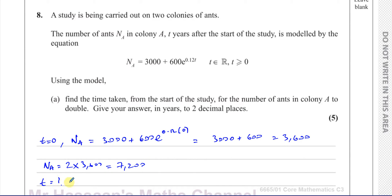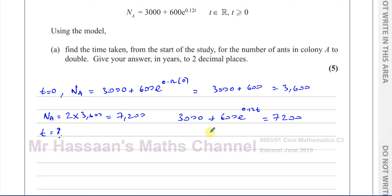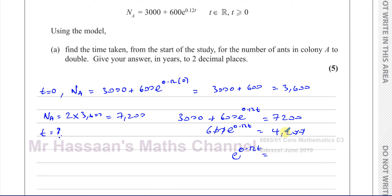We want the number of ants to become double 3600, which is 7200. We want to find what t is when Na equals 7200. So I replace Na with 7200: 3000 plus 600 times e to the power of 0.12t equals 7200. Subtracting 3000 from both sides gives 600 e to the power of 0.12t equals 4200. Dividing both sides by 600 gives e to the power of 0.12t equals 7.